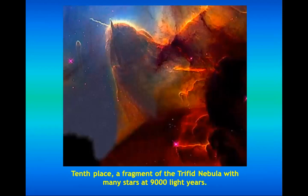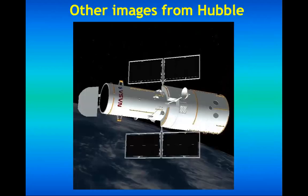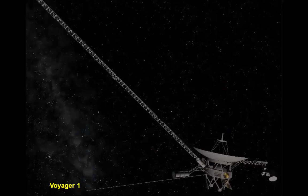In tenth place, a fragment of the Trifid Nebula with many stars at 9,000 light years. And other images taken by Hubble. This one is the Voyager 1 — its purpose is to voyage beyond the solar system.